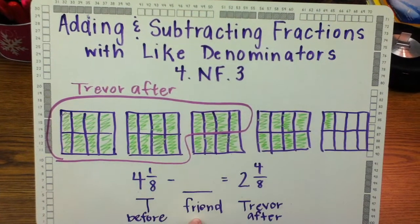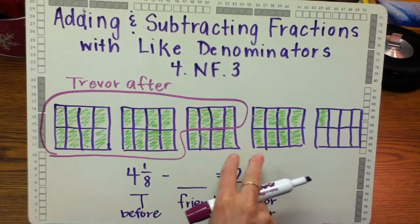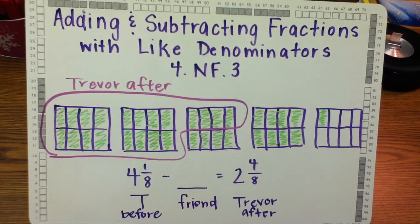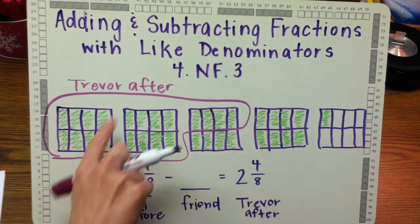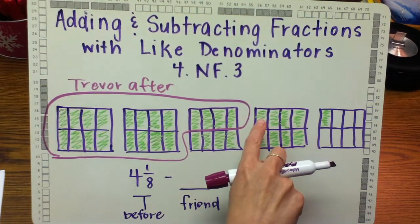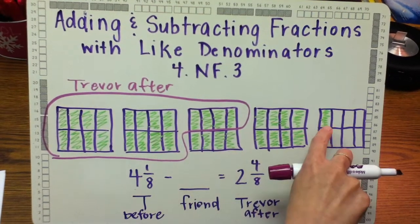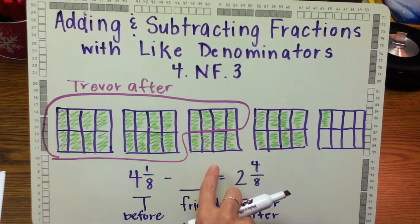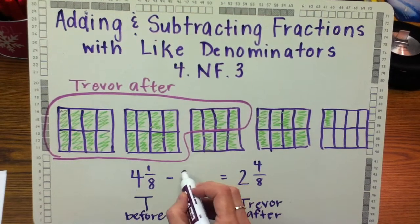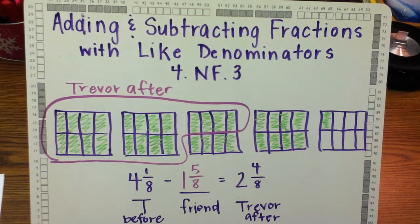To figure out what he gave to his friend, all I need to do is look at what is not circled that's shaded. Here he has one pizza and then four-eighths and one-eighth, which is one and five-eighths. So he gave his friend one and five-eighths.